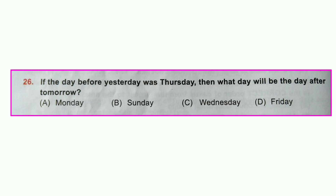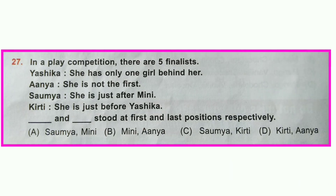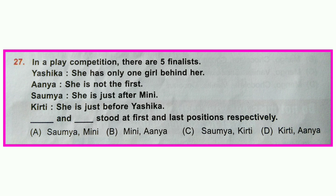Question number twenty-six: If the day before yesterday was Thursday, what day will be the day after tomorrow? Day before yesterday was Thursday, so yesterday was Friday, today is Saturday, tomorrow is Sunday, and the day after tomorrow is Monday. Option A is correct: Monday.